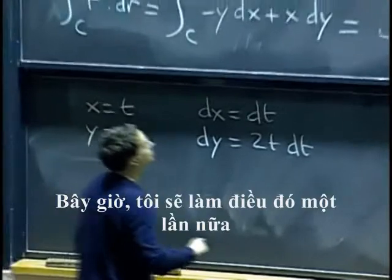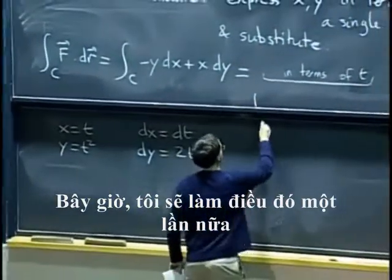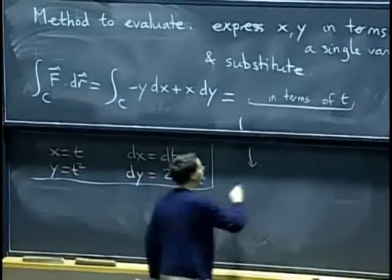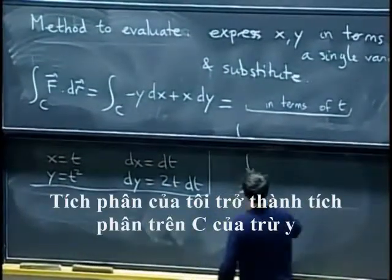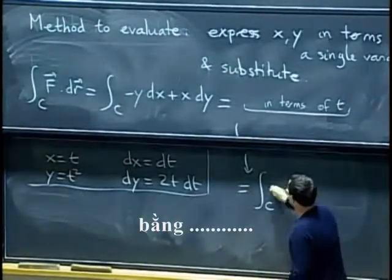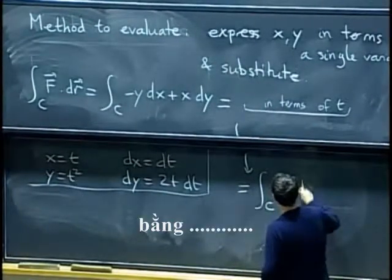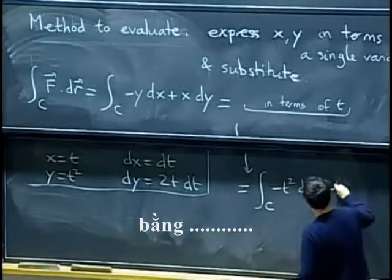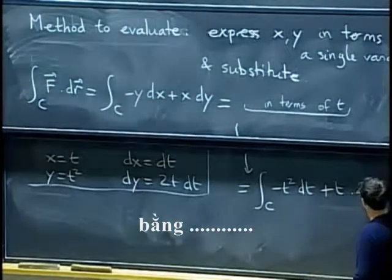So now, I am going to do it again. I am going to switch from one board to the next one. My integral becomes the integral over c of negative y is minus t squared dt plus x is t times dy is 2t dt.